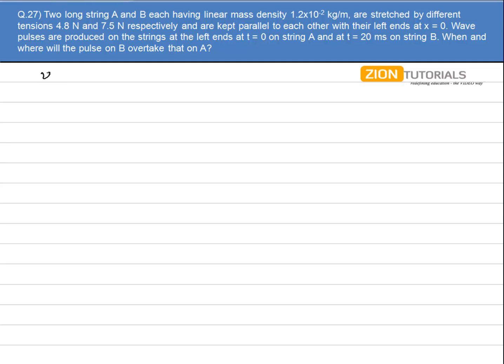First of all, I will calculate the velocity of the string in each of them. So it will be under root of 4.8 by 1.2 x 10^-2, so it will be 20 meter per second in A. And similarly for B, it will be 7.5 by 1.2 x 10^-2, so it comes out to be 25 meter per second.